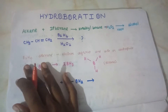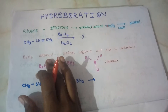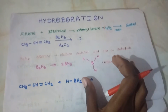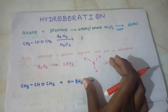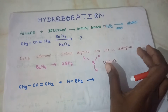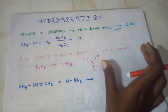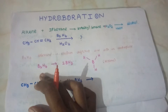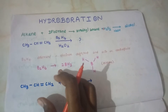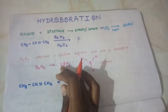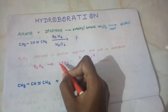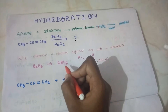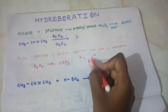This is diborane. B2H6 is diborane. This is an electron-deficient molecule, so it will react with alkene. B2H6 has two boranes — it dissociates into two boranes, as shown in this structure.